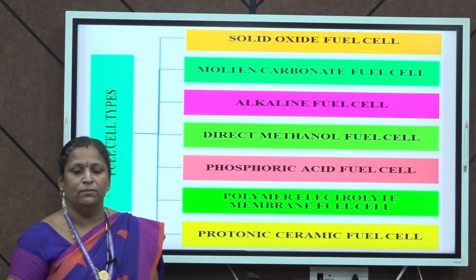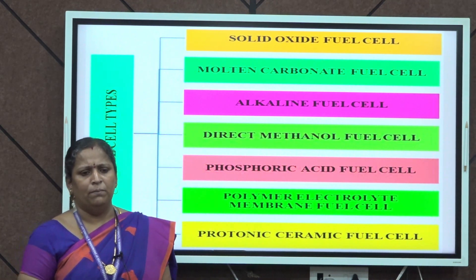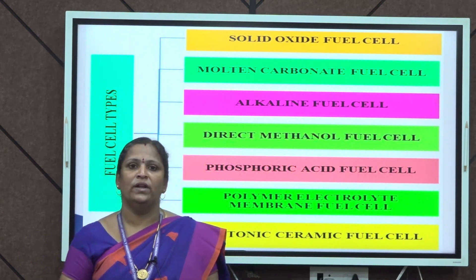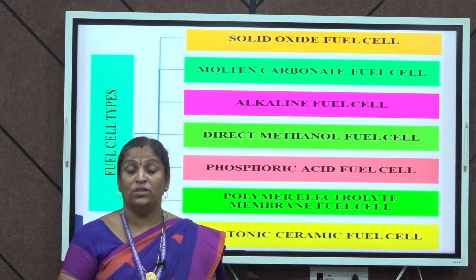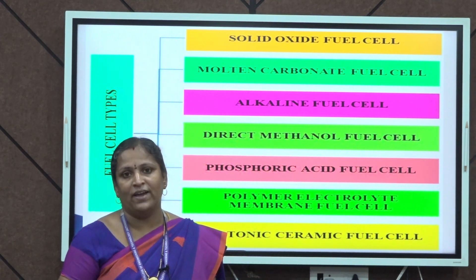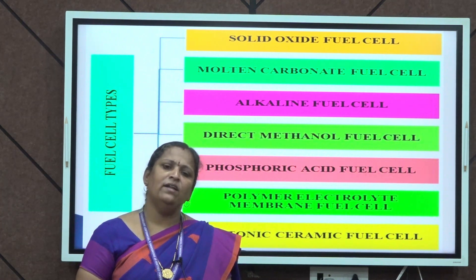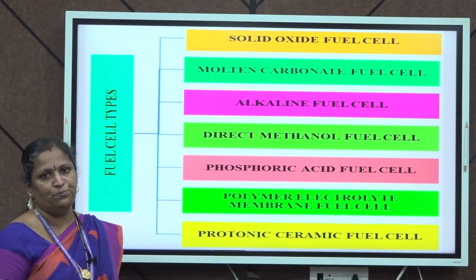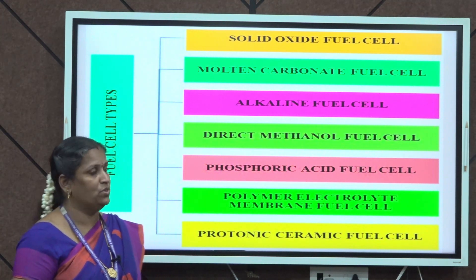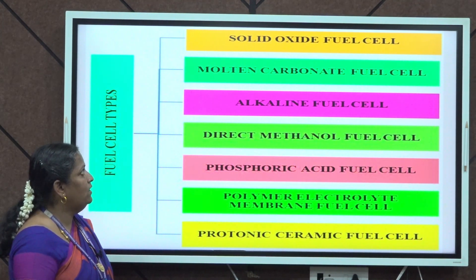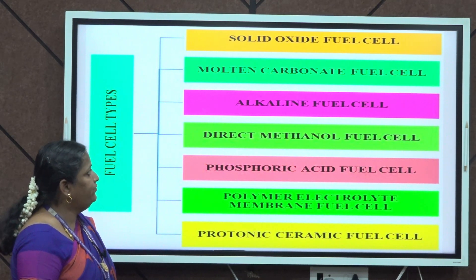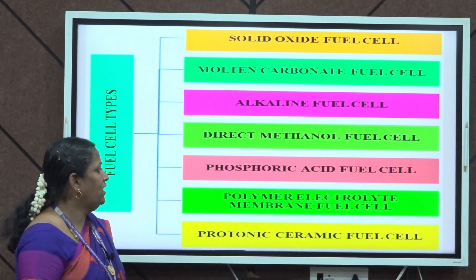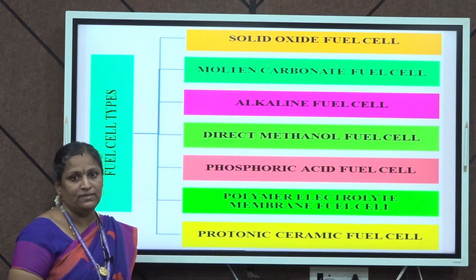Coming to the broad classification of fuel cells: basically, fuel cells are classified based on the type of electrolyte used, the chemical nature of the electrolyte, the operating temperature, and even based on the application. There are numerous fuel cell types available. Here in this video, we are going to learn about the types based on the electrolyte being used. So we have solid oxide fuel cell, molten carbonate fuel cell, alkali fuel cell, direct methanol fuel cell, phosphoric acid fuel cell, polymer electrolyte membrane fuel cell, and protonic ceramic fuel cell.